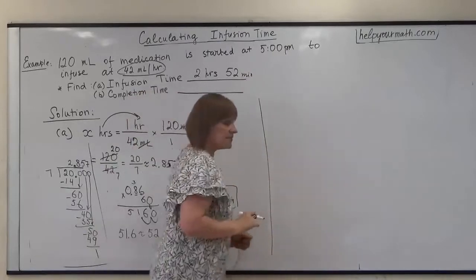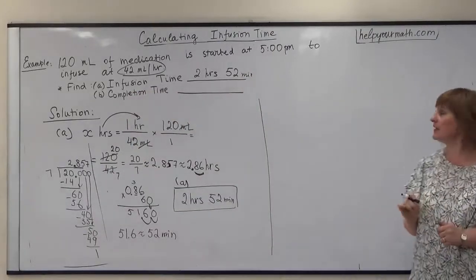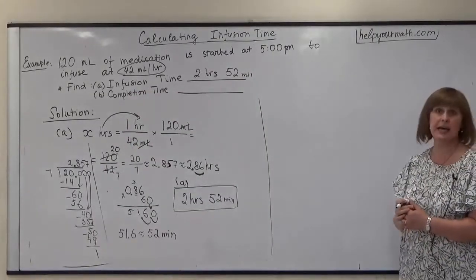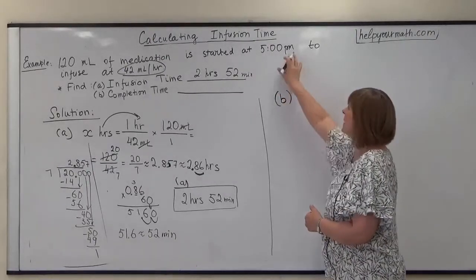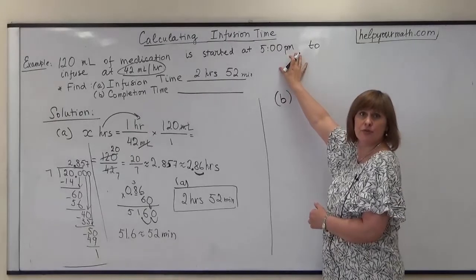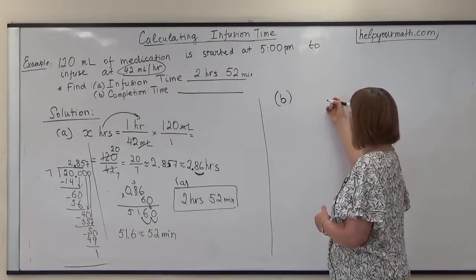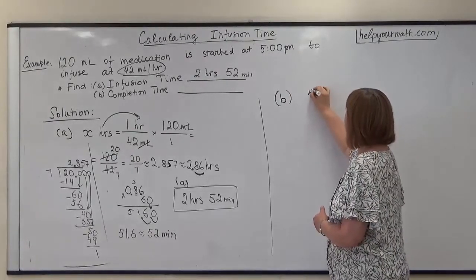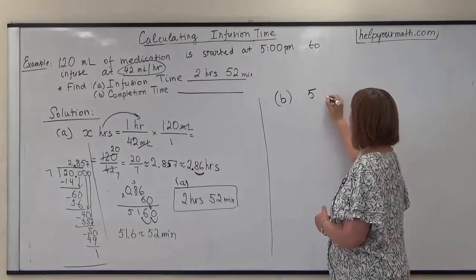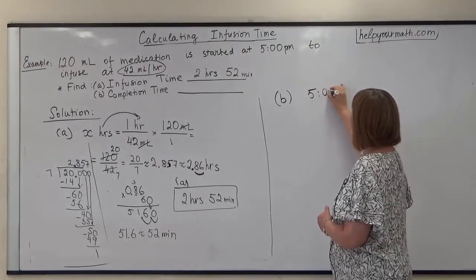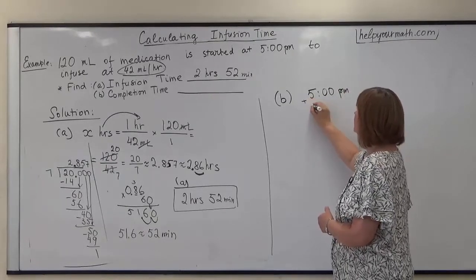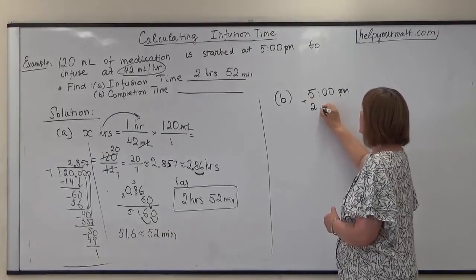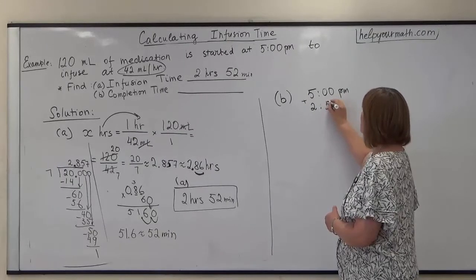Then after that the second question here is to find the completion time. We want to look at what time the infusion started. It started at 5 p.m. We will do that in traditional time, 5 p.m., and we will add 2 hours and 52 minutes.